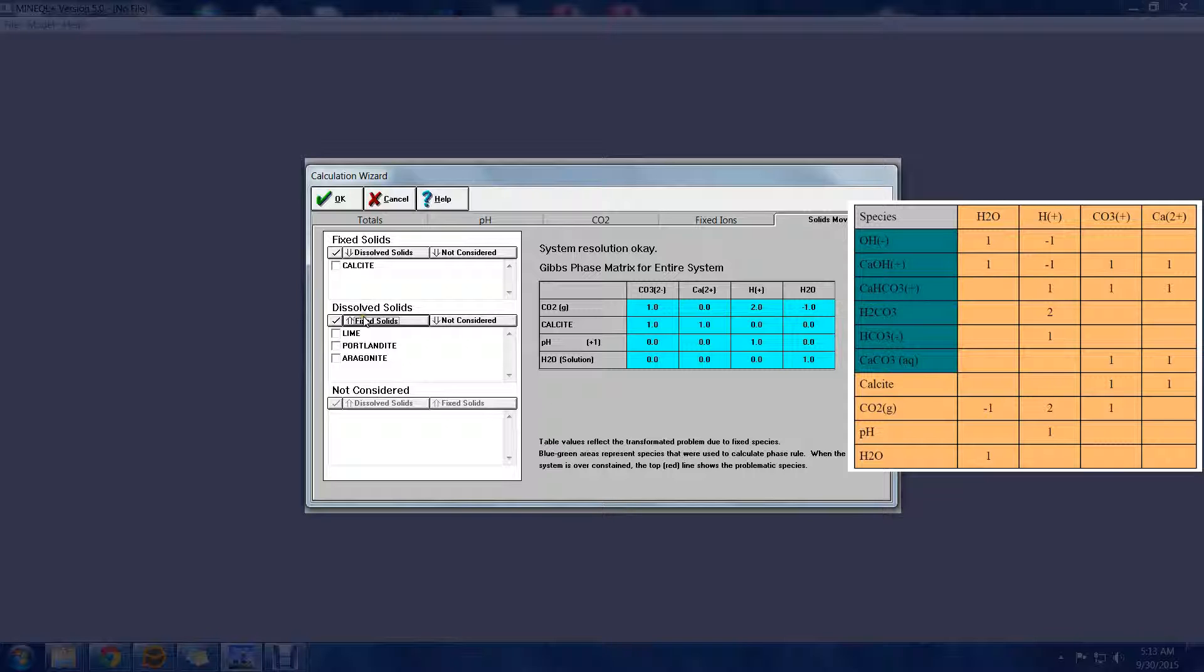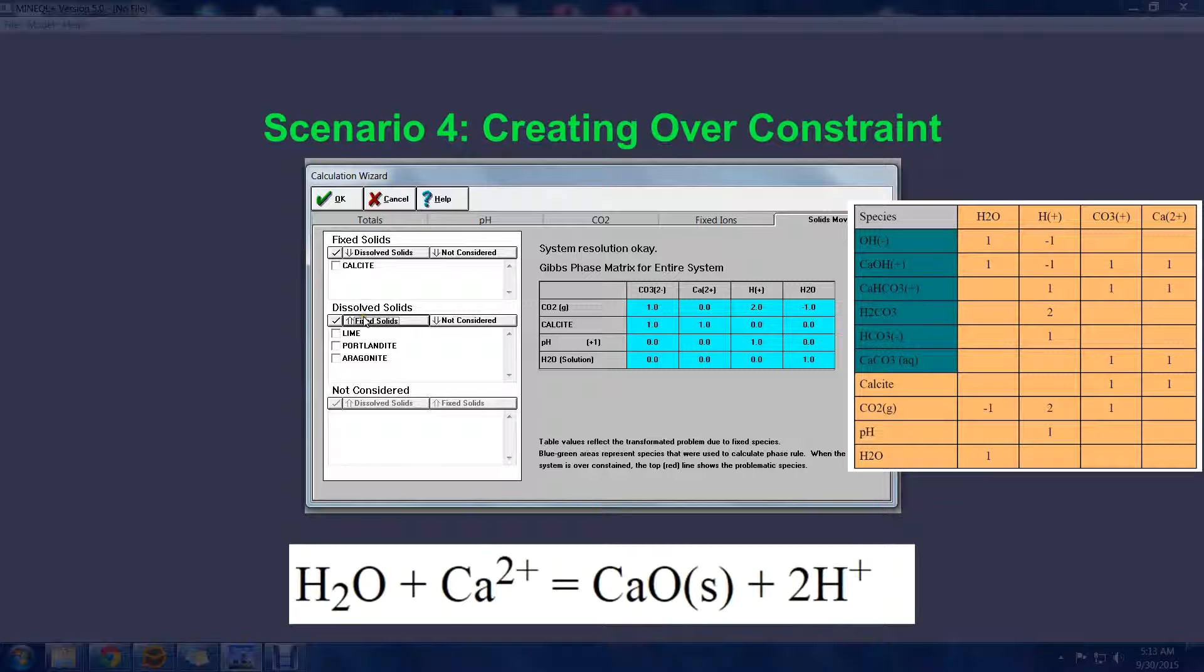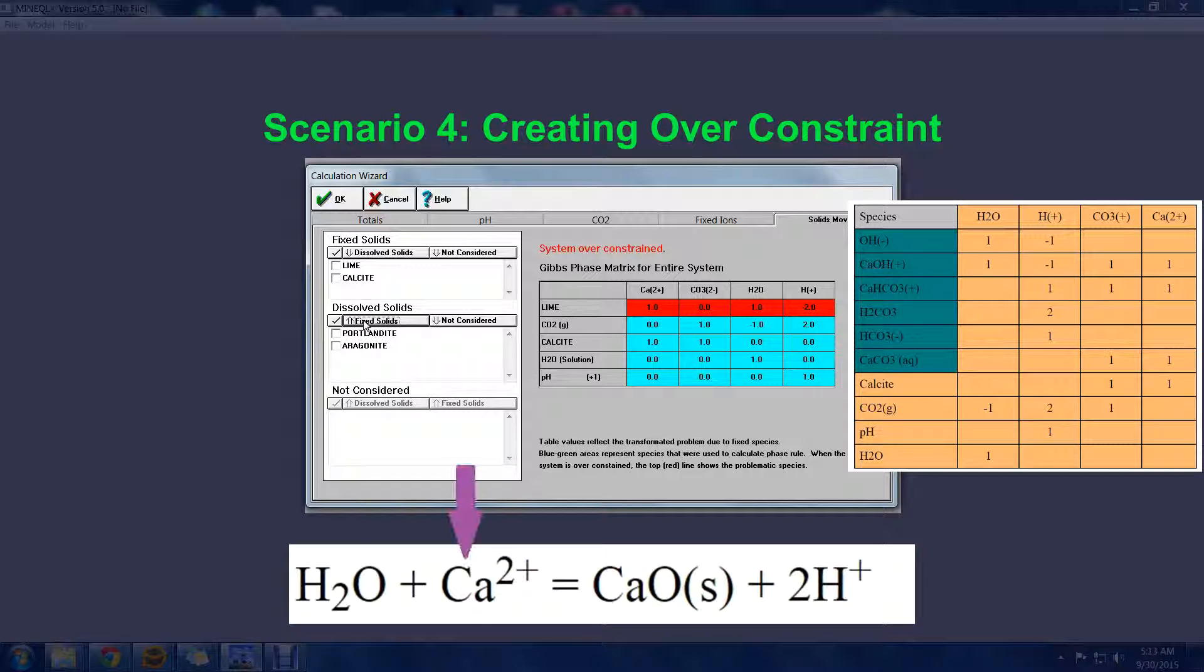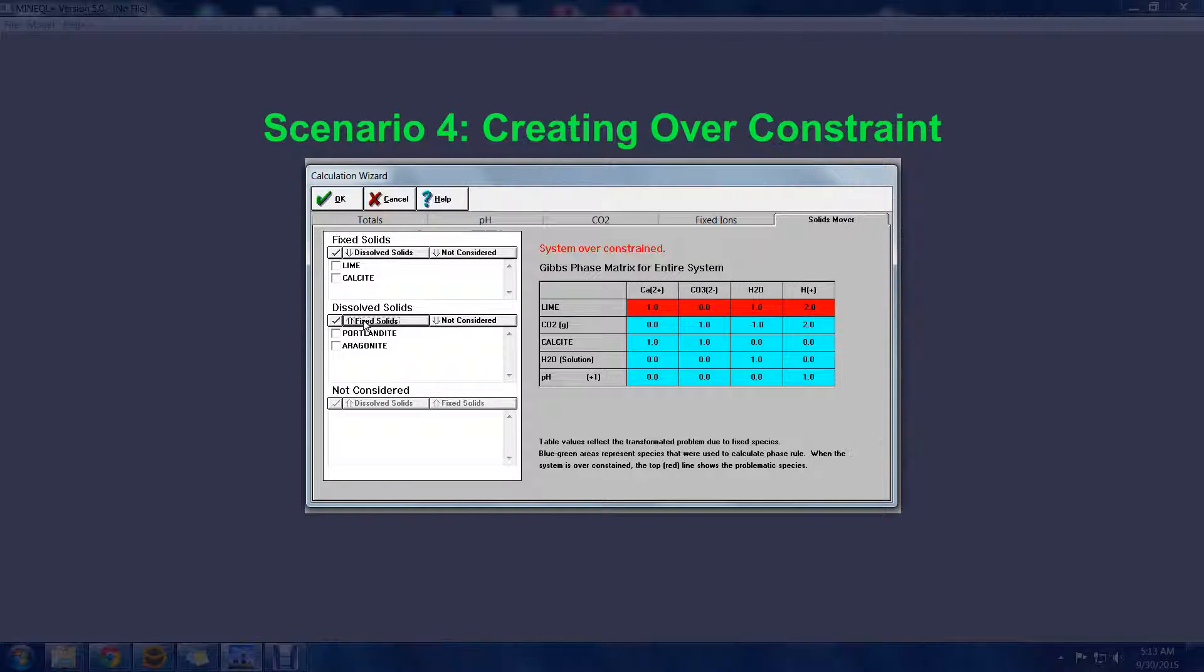Now, what happens if we try to also have the system in equilibrium with an infinite source of lime? The lime, on its own, can control either the calcium, water, or the proton, but in our system, these components are already controlled by other species. At this point, the system is over-constrained, and the tableau has no way to accommodate the additional requirement.